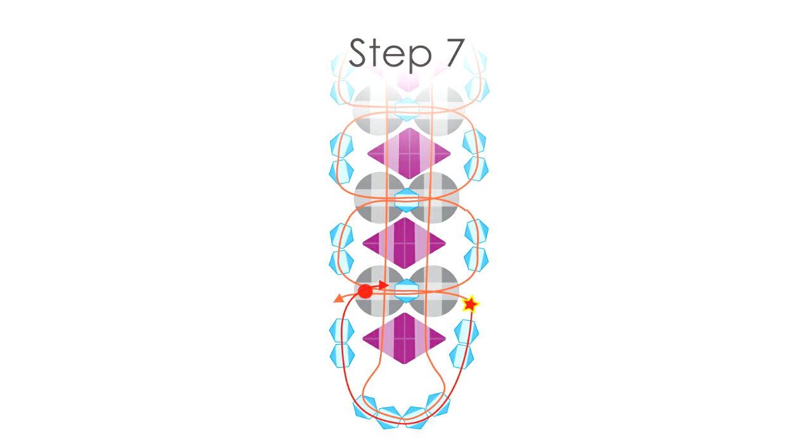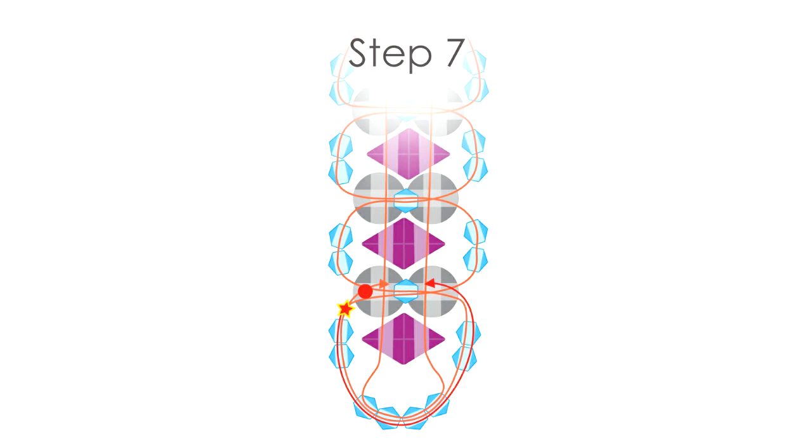Step 7, re-thread the original seed bead loop closest to you, first with one length of thread and then the other, crossing the threads a final time.